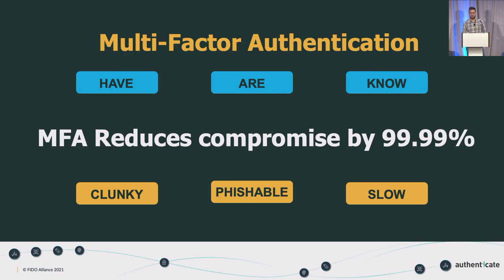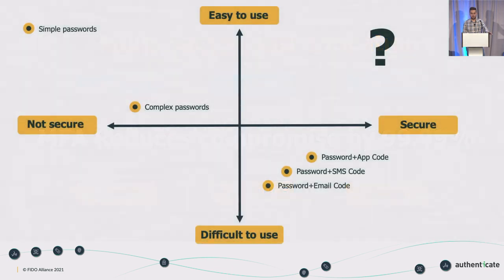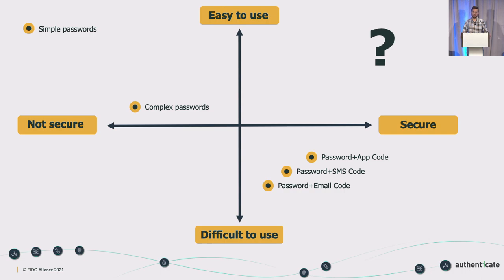Any authentication method that wants to succeed has to meet two criteria: it's got to be usable and it's got to be secure. We have this graph with usability on one axis and security on the other. Simple passwords are easy to use but not secure. Complex passwords are more secure but harder to use — especially on a TV remote. And when we introduced MFA, we degraded user experience while waiting for codes. So there's this whole quadrant — easy to use and secure — that represents an opportunity.